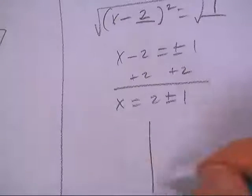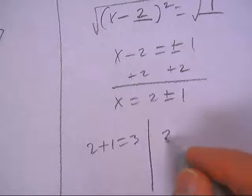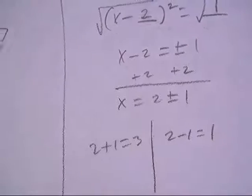2 plus 1 is 3, 2 minus 1 is 1. There's your two answers.